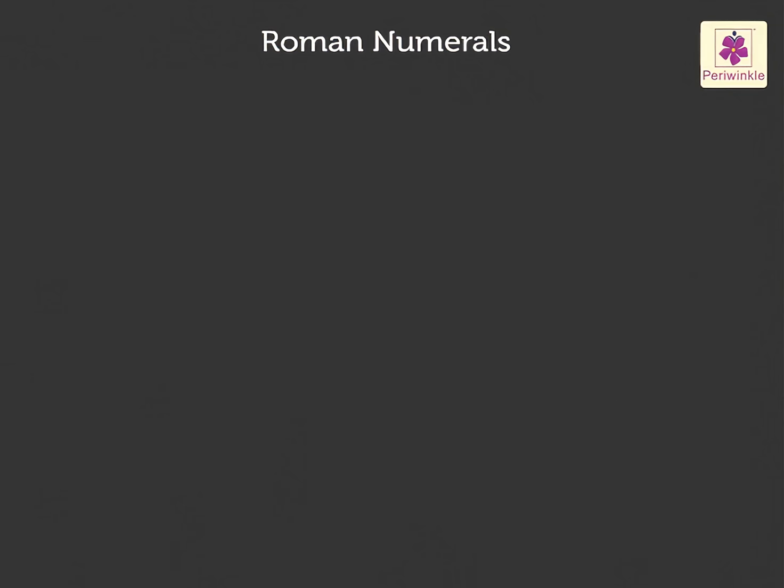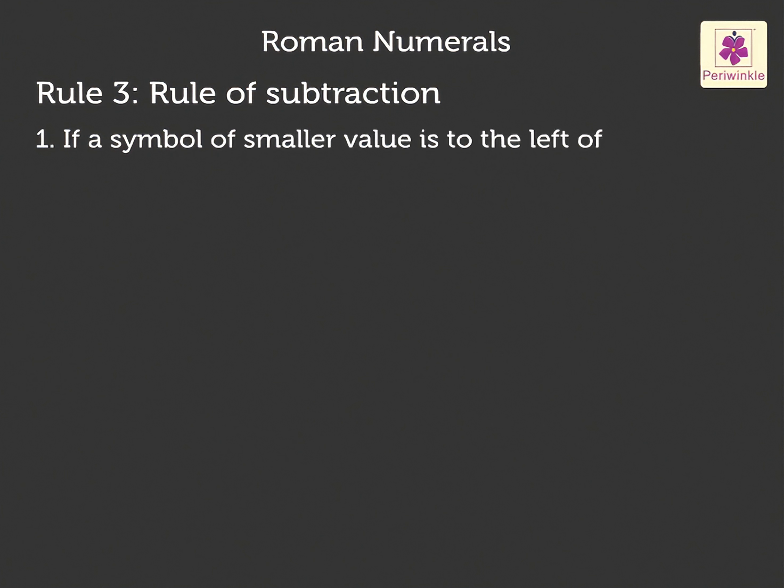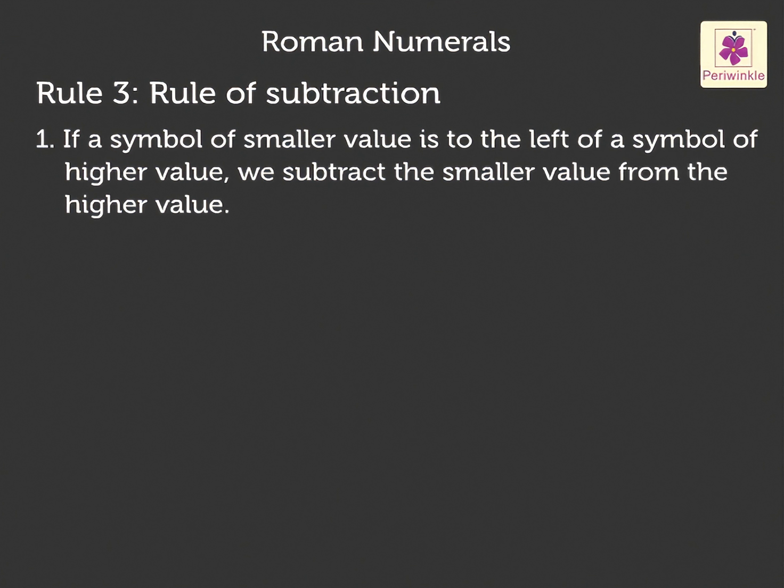Finally, we have the third rule. Rule 3. Rule of subtraction. If a symbol of smaller value is to the left of a symbol of higher value, we subtract the smaller value from the higher value. For example, let us take the number XC. X has a value of 10. And C has a value of 100. So, XC will be 100 minus 10 is equal to 90.